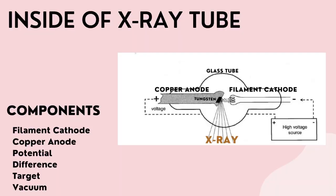Let's come to the x-ray tube where x-ray is produced. This is a diagram of an x-ray tube. Let's see how the inside part of the x-ray tube looks like. The basic components in an x-ray tube are the filament cathode, copper anode, potential difference, and target.